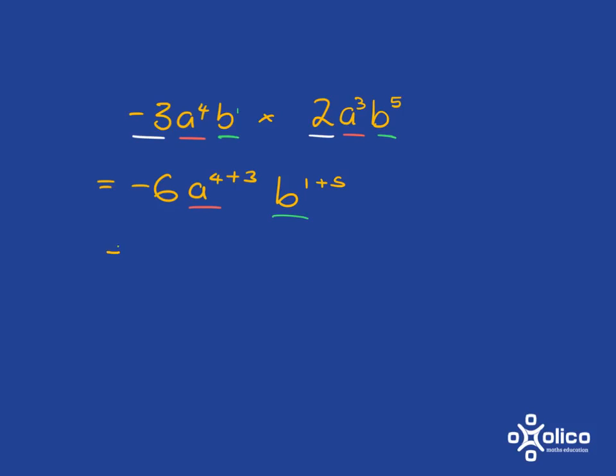And now we can just finish up here saying it's negative 6, a to the 7, b to the 6.